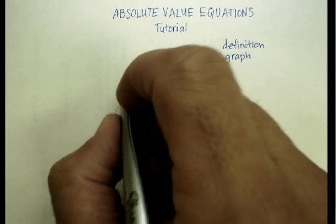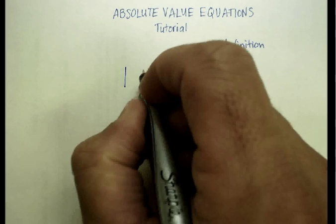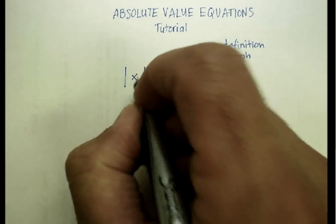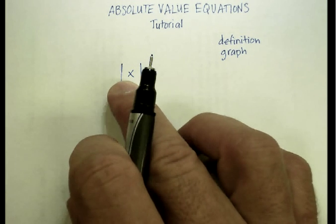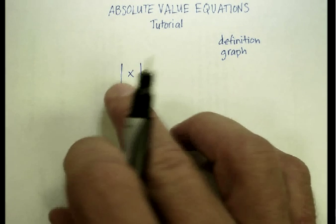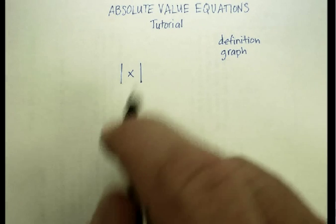Well, you probably recognize an absolute value as being some kind of a variable or equation or set of terms inside two lines that look like this.